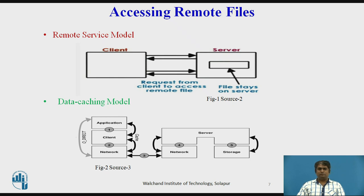A distributed file system may use one of the following models to service client file access requests when the accessed file is remote. In the remote service model, the processing of the client request is performed at the server node. The client's request for file access is delivered to the server, which accepts the request and forwards the result back to the client. The access requests and server replies are transferred across the network as messages. The diagram shows the client-server model, where the client requests access to remote files and the file server responds to those requests.